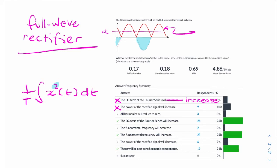The next option, all harmonics will reduce to zero. So three people thought that was true. If all harmonics reduce to zero, we end up with DC. So that would give you DC. But this isn't DC.